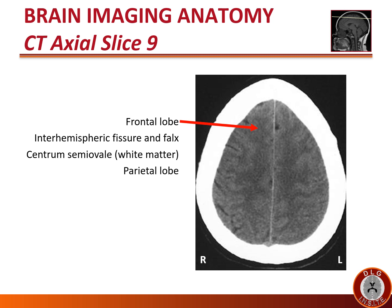At this level, the cerebral cortex anterior to the central sulcus remains the frontal lobe. Between the two hemispheres lie both the interhemispheric fissure — a CSF structure — and the falx — a dural structure. At this level, when we no longer see the lateral ventricles, the deep white matter is called the centrum semiovale, because it is in the central part of the brain and is semi-oval. The parietal lobe makes up the posterior aspect of the brain on this slice, and we remain too rostral to see the occipital lobe.